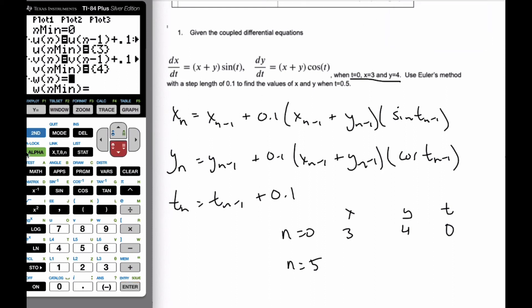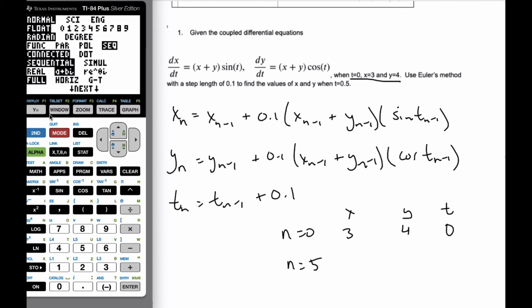Finish off the t value, it's going to be t of n minus 1 plus the step of 0.1. And I'm starting off at t is 0. That's where it starts off. And then since it's trigonometry, I'm going to make sure I'm in radians. And I am in radians.